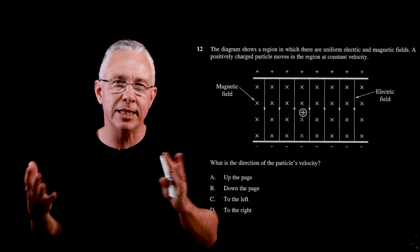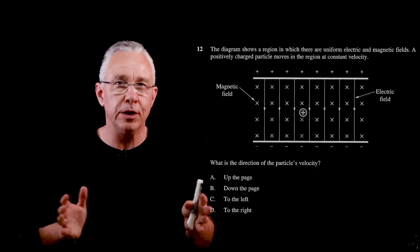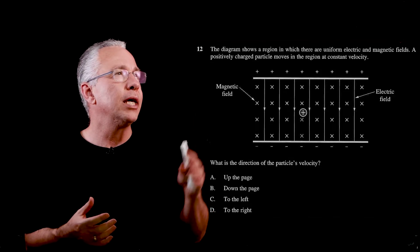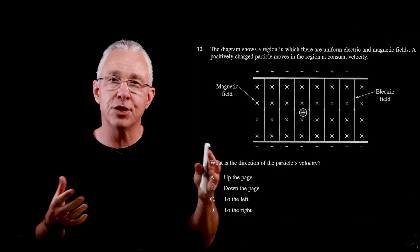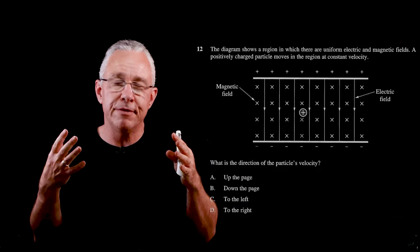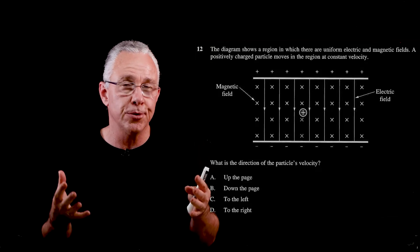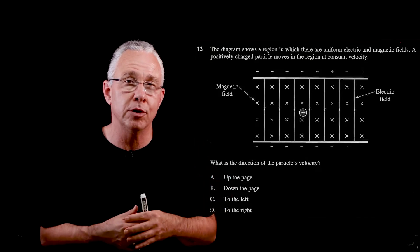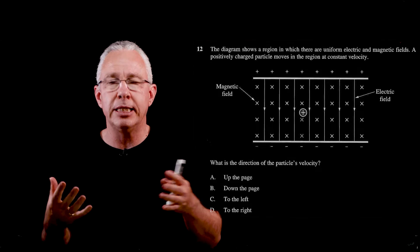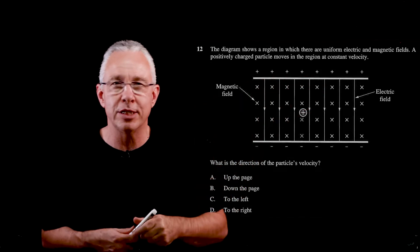In this question we have charges in two fields — a magnetic field and an electric field — so the charges will experience forces. In an electric field, a charge experiences a force regardless of whether it's moving. It needs to be moving to experience a force in a magnetic field. We're told the velocity is constant.